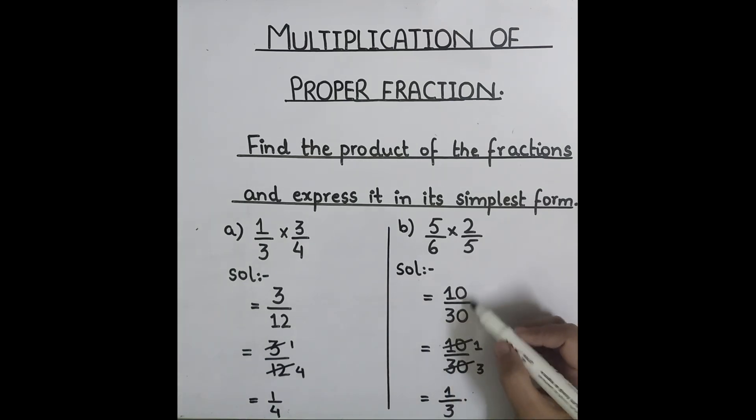You can also cut this fraction on the table of five. Five two times ten and five six times thirty. Now, two one times two, two three times six. So the answer is the same.